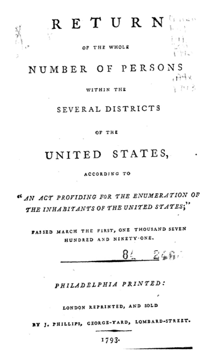Approximately one-third of the original census data has been lost or destroyed since documentation. The data was lost in the 1790–1830 time period and included data from Connecticut, Maine, Maryland, Massachusetts, New Hampshire, New York, North Carolina, Pennsylvania, Rhode Island, South Carolina, Vermont, Delaware, Georgia, New Jersey, and Virginia. However, the census was proven factual and the existence of most of these data can be confirmed in many secondary sources pertaining to the first census.